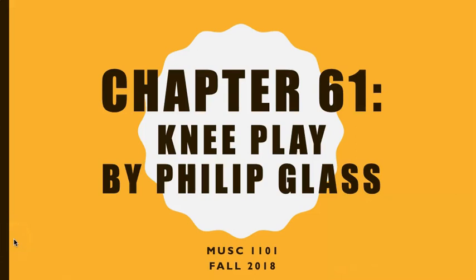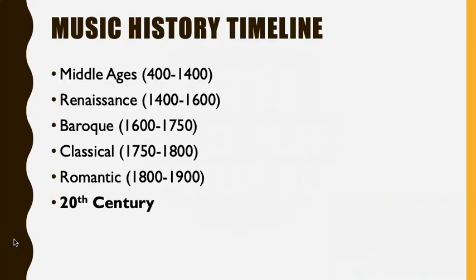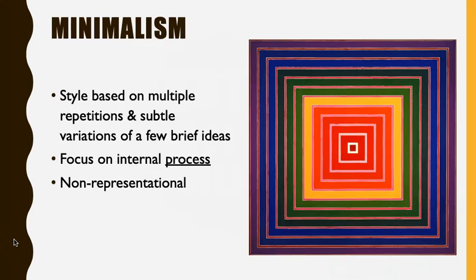Hi everyone! Welcome back to Music Appreciation. Today we're taking a look at Chapter 61, a knee play from the opera Einstein on the Beach by the composer Philip Glass. Philip Glass is one of the most influential composers of the 20th century, and we are still in the mid-20th century by this point. He introduces for us an entirely new style of music that we haven't discussed so far yet.